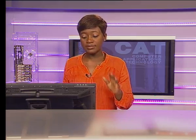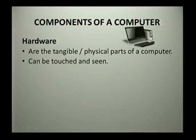The next part is understanding the different components of a computer. These components are essential in making the information processing cycle happen — without them, the process would not be possible. These components are split into two sections: hardware and software. Hardware is the tangible or physical parts of a computer that you can see and touch, such as your screen, keyboard, and mouse.